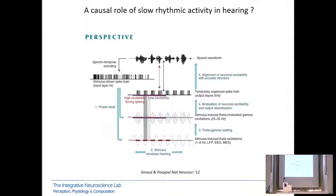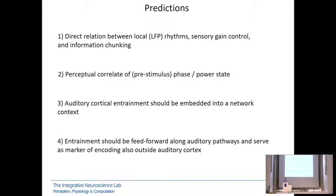This has been summarized in the Giraud and Poeppel diagram, which predicts that stimulus-induced oscillations induce temporally organized spike trains, implementing a chunking of acoustic information that facilitates downstream decoding. This hypothesis makes several predictions we have tested over the last years. First, there should be a direct relation between local network rhythms and sensory gain control — not just firing rates, but actual gain control and information chunking. Second, there should be a perceptual correlate of phase or power on perception. Third, all this should make sense in a network context.